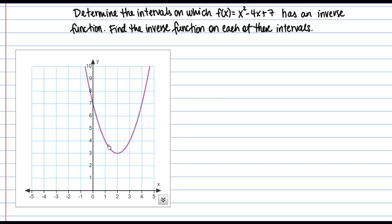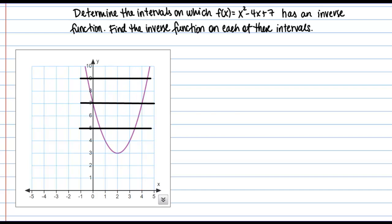Here's our function — it's a parabola. Before we answer the original question, let's think about whether this function would have an inverse on its unrestricted domain. For a function to have an inverse in general, it has to be one-to-one. Graphically, this means it passes the horizontal line test. This whole parabola, as is, does not pass the horizontal line test — I can draw horizontal lines and they'll touch the function in more than one spot. So this function as a whole does not have an inverse.